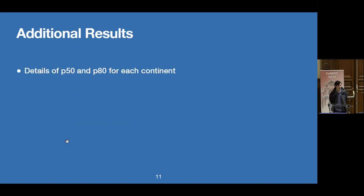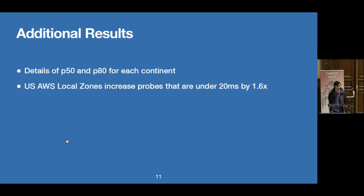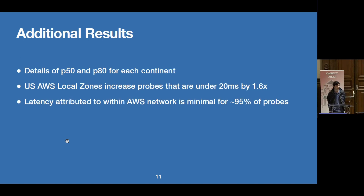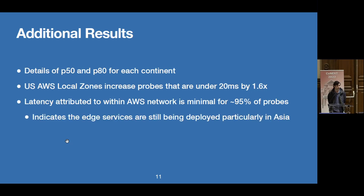We have additional results in the paper showing median and PAD details for all continents, and we look at launched AWS local zones in the US compared to just regions, finding large improvements. We also attribute how much of this edge latency is within the AWS network — it should be small if we're looking at the true edge, and we find it is small for most probes. In particular, in Asia and in the Philippines, there's still some time being spent within the AWS network even when targeting the edge, indicating it might still be being deployed there.